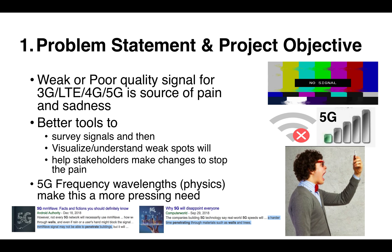We have a hypothesis: better tools to survey signal levels across these spectrums and to visualize and understand weak spots or changes would be useful to help stakeholders make changes to stop the pain. These stakeholders range from a homeowner running Wi-Fi or private LTE in their place of business, all the way up to people on top of buildings or poles charged with directing antennas for 5G, for example.